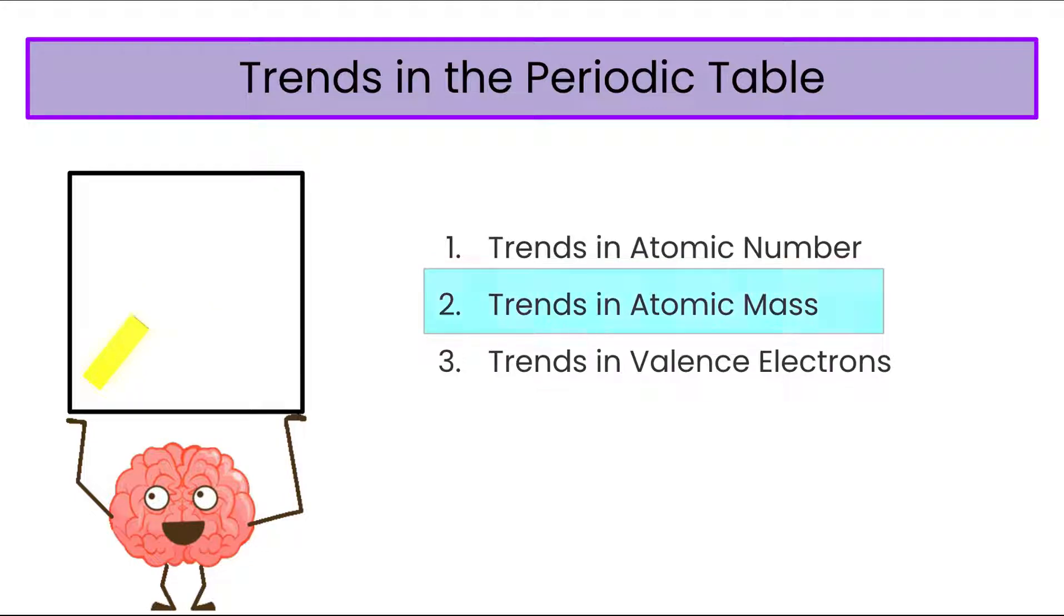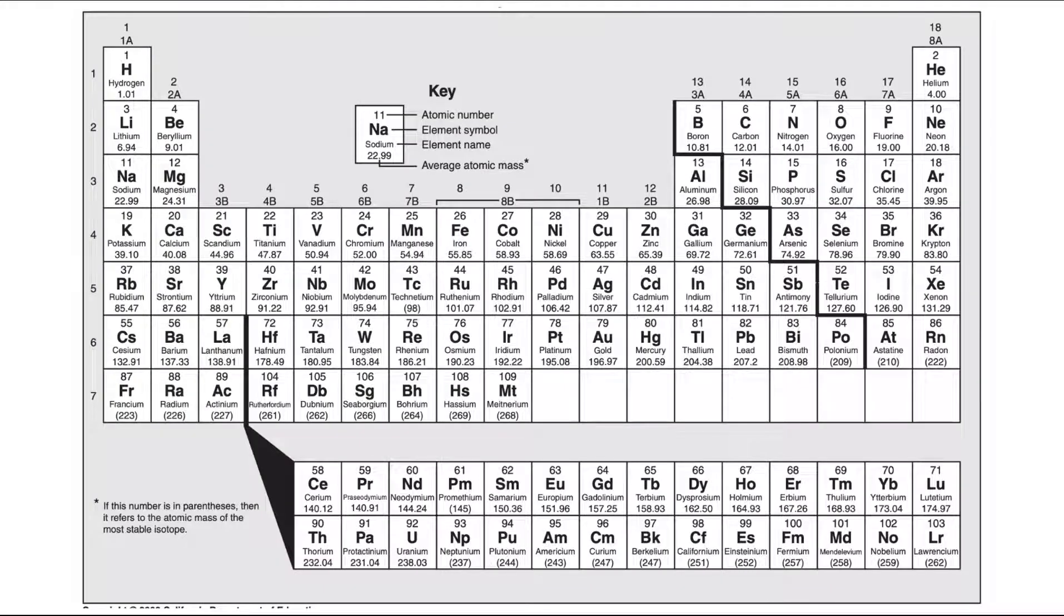So let's talk about our second trend, which is atomic mass. If you take a look at the atomic masses, those are found at the bottom here. So hydrogen's 1.01, helium's 4, and then lithium's 6.94, beryllium's 9.01, and so on. As you go up an atomic number, your atomic masses also increase. So atomic mass is increasing as you go across any period, or even when you look down a group, atomic mass is increasing.